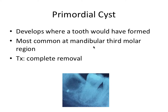Next we have the primordial cyst, which develops where a tooth would have formed — a tooth should have been there but didn't form. It presents as a radiolucent pocket, most commonly at the mandibular third molar region. Treatment is complete removal.